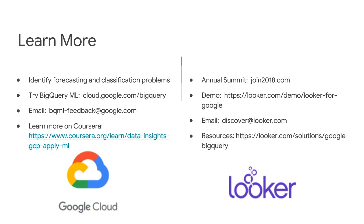There's a question about how to determine whether a feature is categorical versus numerical. What BigQuery ML does is use the schema of the table — if a field or column is a string field, it's assumed to be categorical; if it's integer or float, it's numerical.